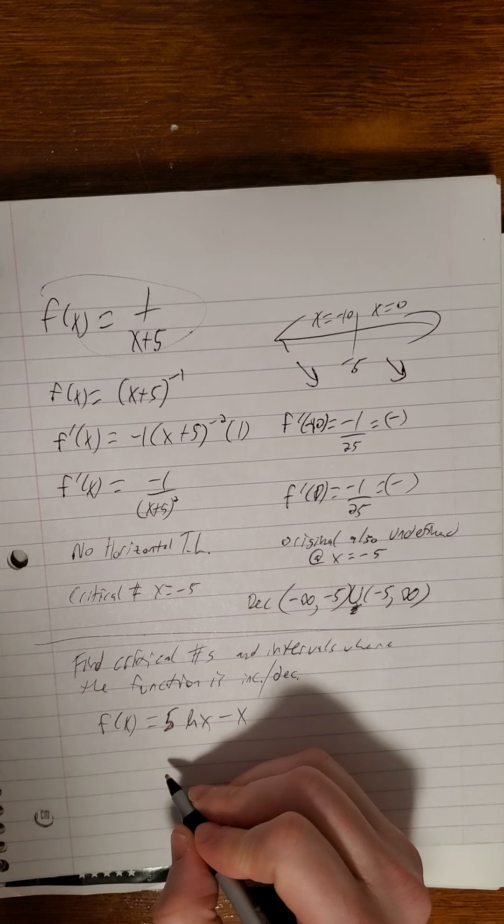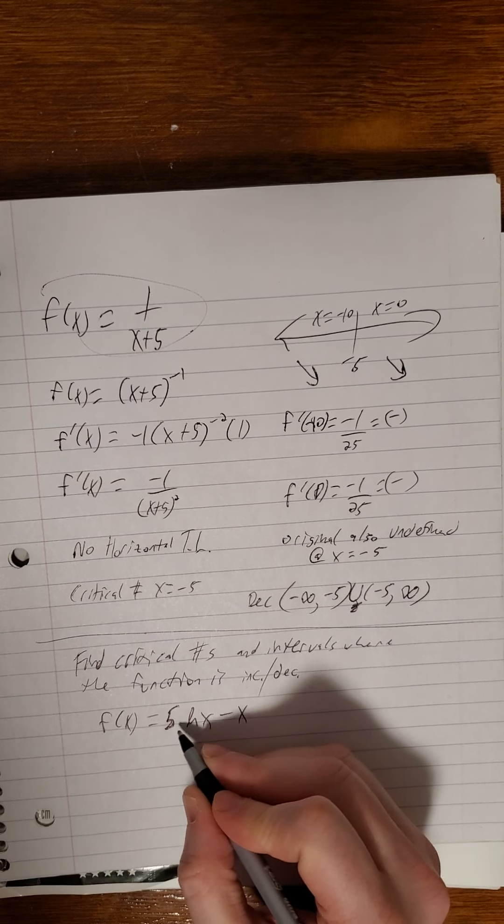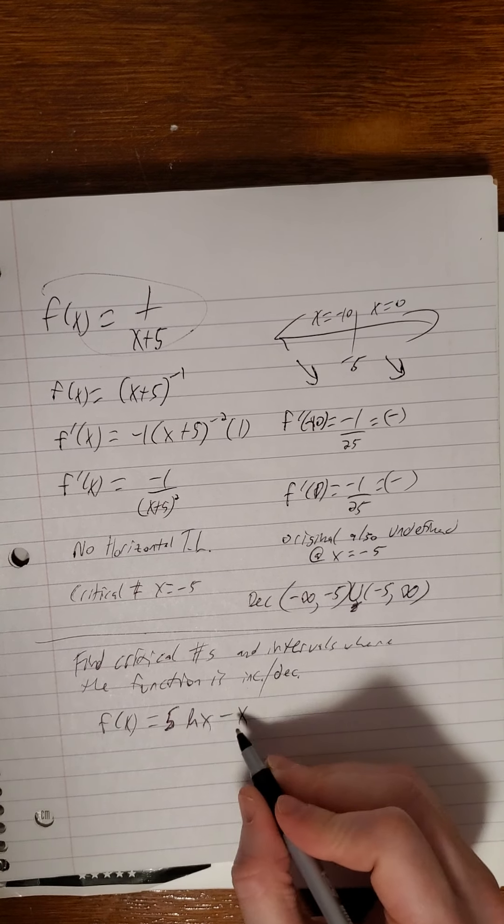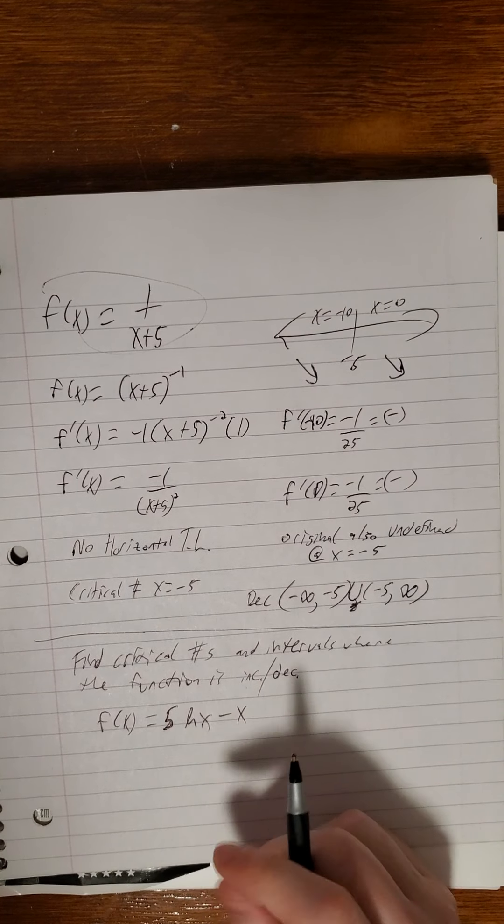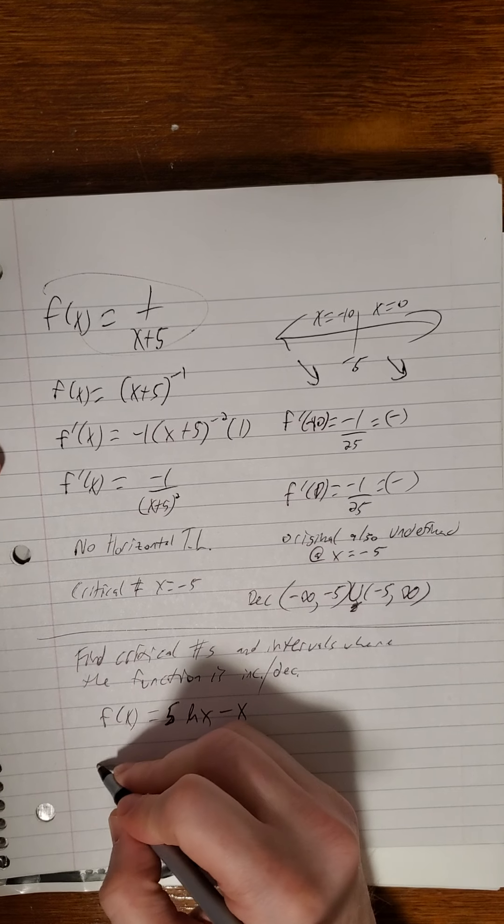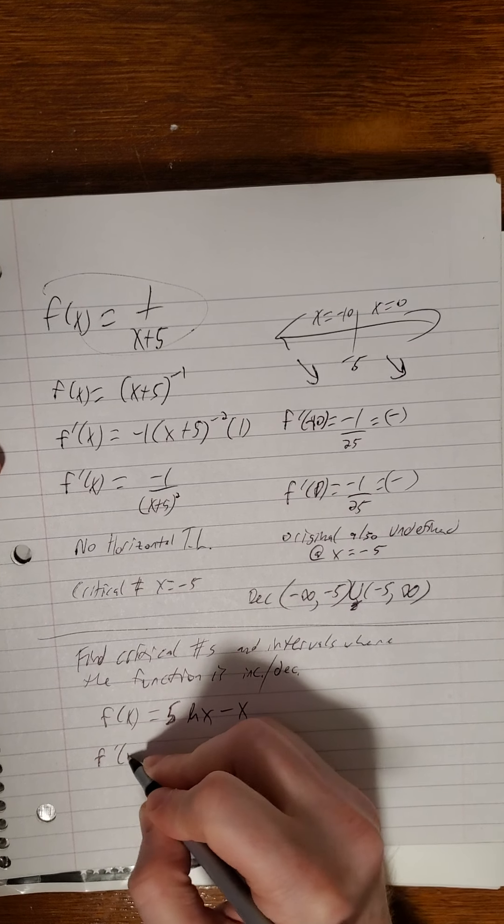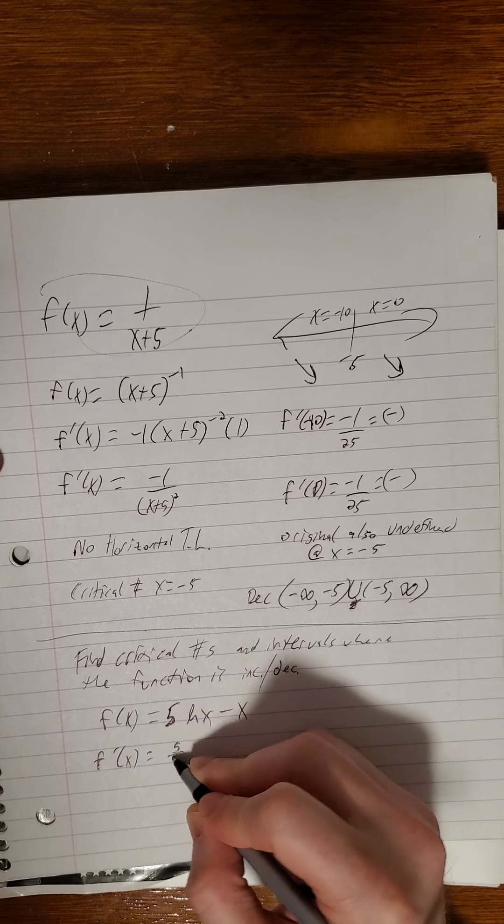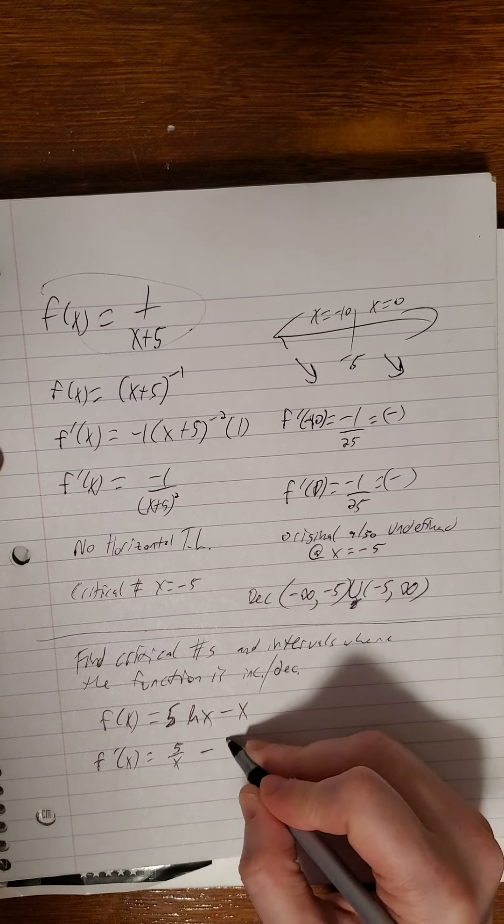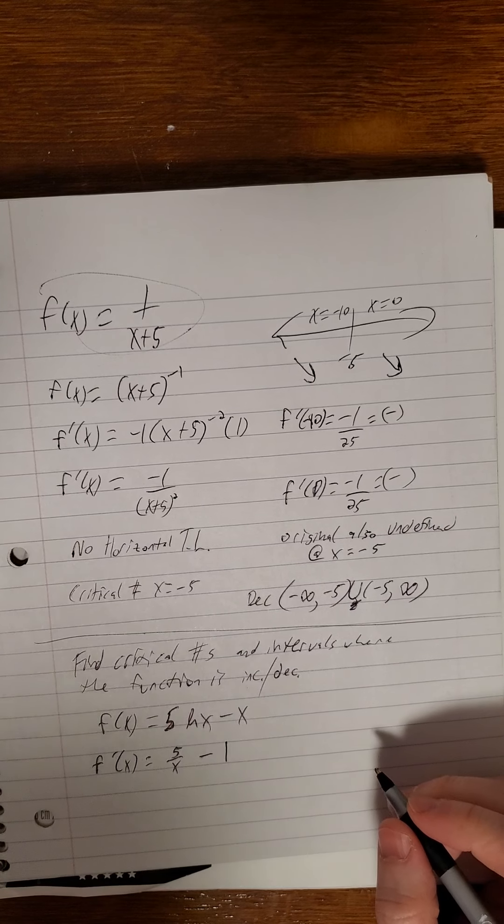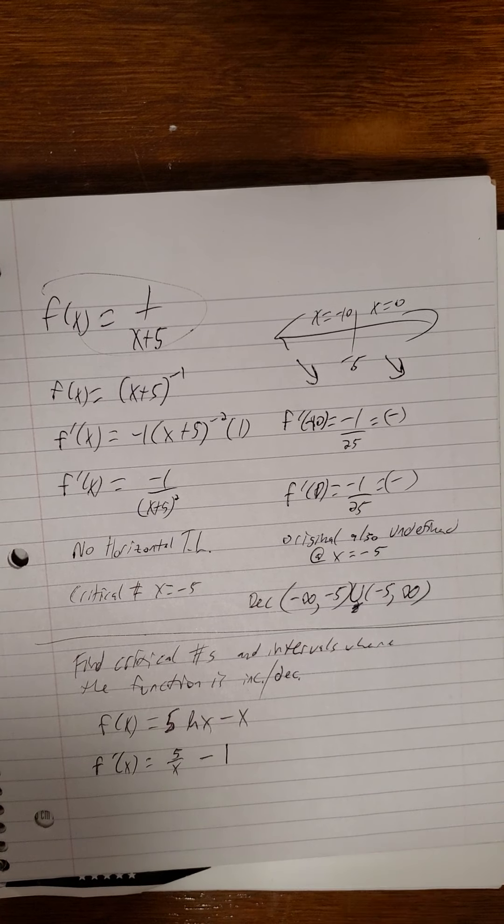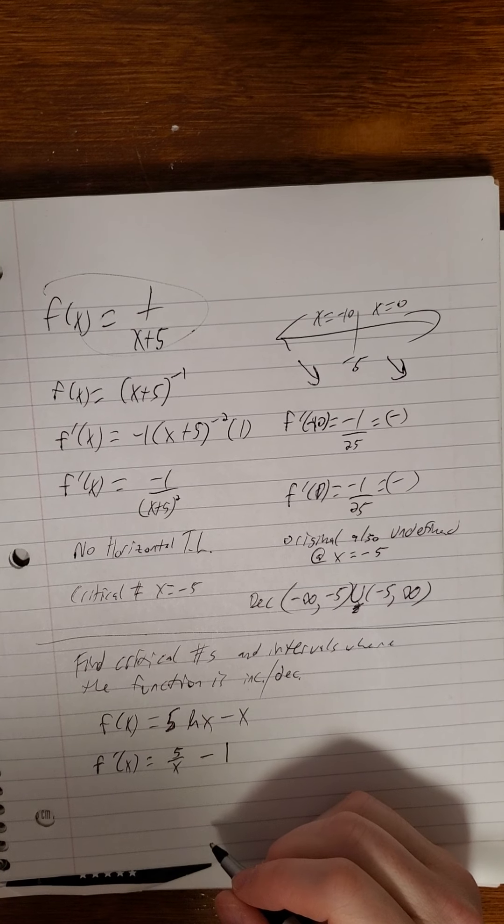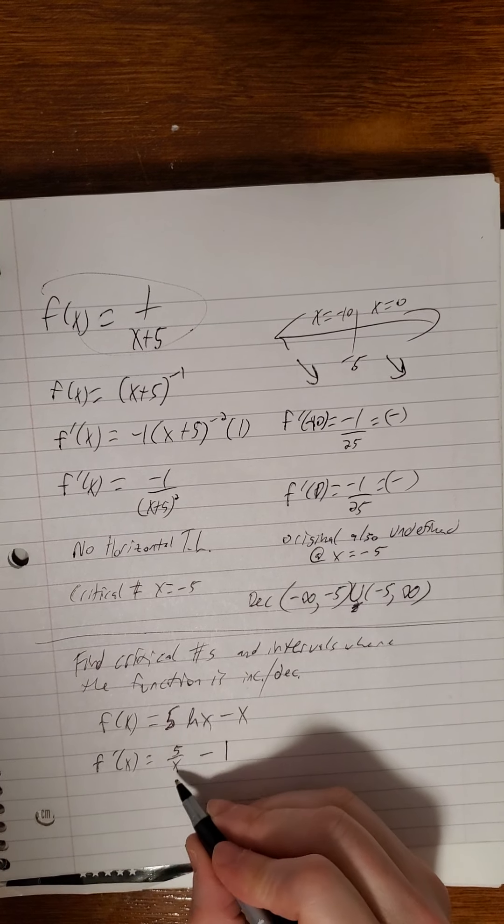Welcome back. So if this had started as natural log of x to the fifth minus x, I would take one step and get it to the spot where the author was kind enough to start us. So we can jump right into finding the derivative. So that's 5 times 1 over x or simply 5 over x. Derivative of x is 1.